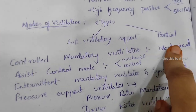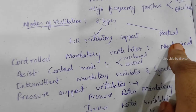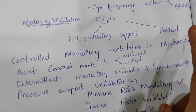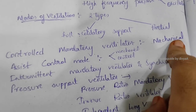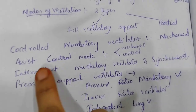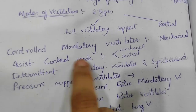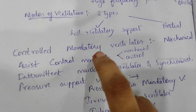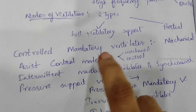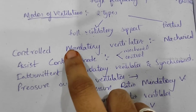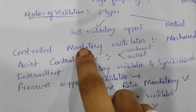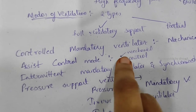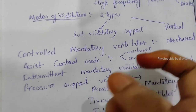Controlled mechanical ventilator: in this mode, tidal volume and respiratory rate are set up. Next is assist control mode, which acts like a controlled mandatory ventilator at baseline.